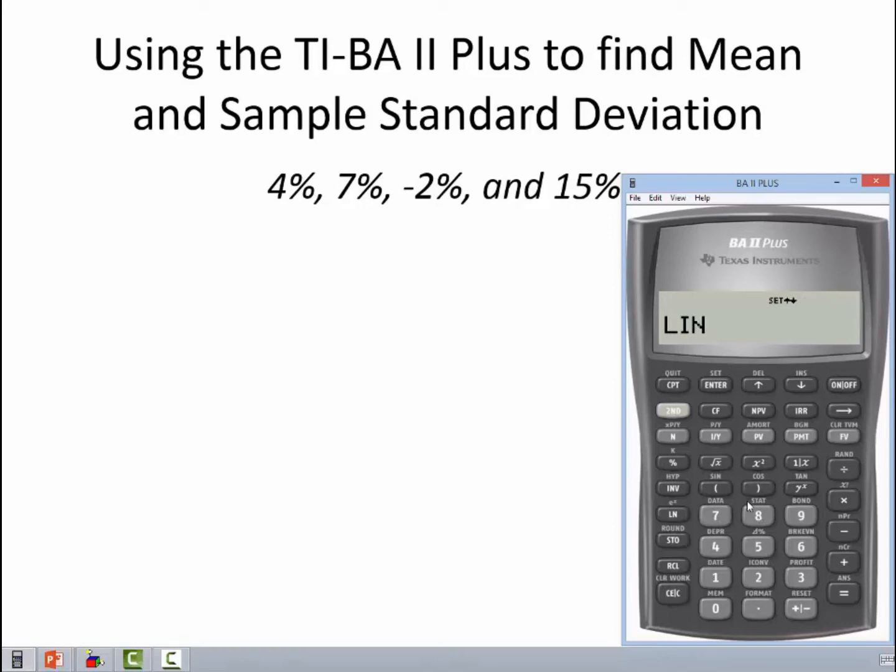And the way to do that is to hit the second key and the number 8. Notice it says stat right above the number 8. That's going to immediately pop up the word Linn.